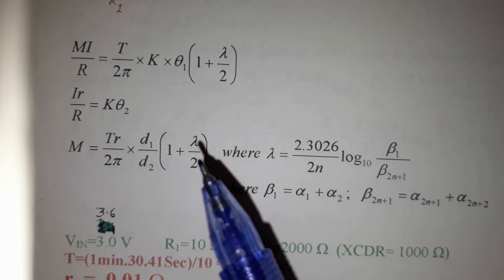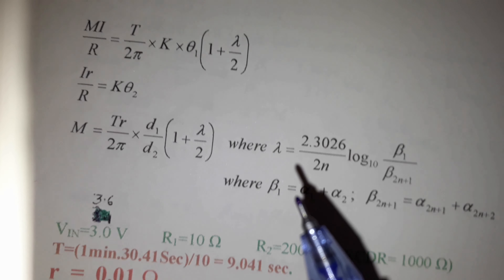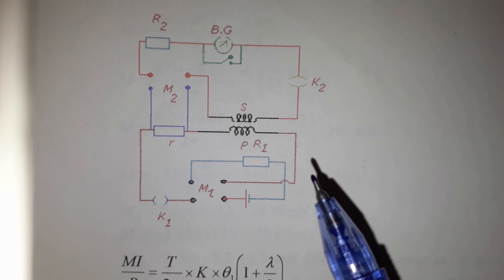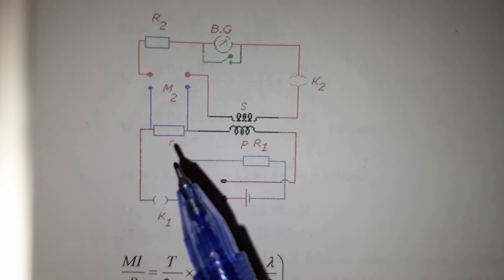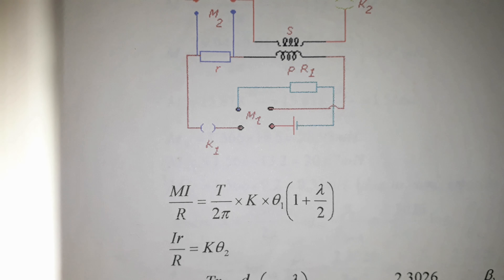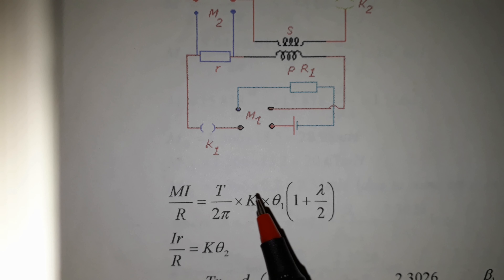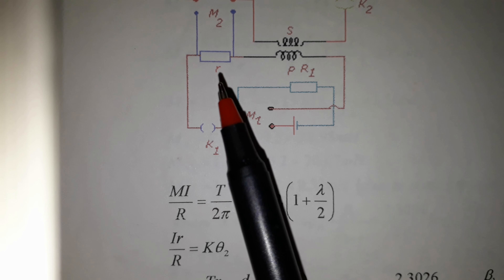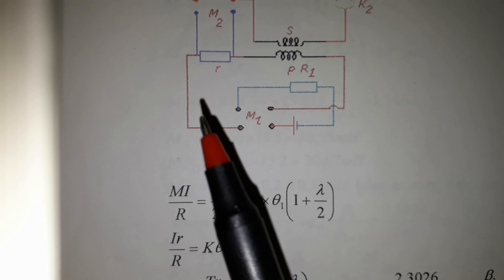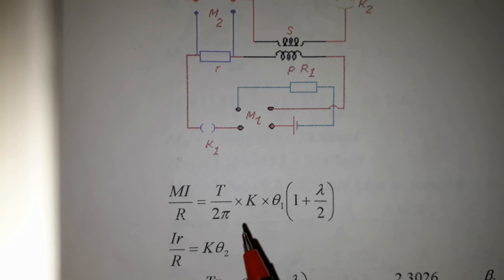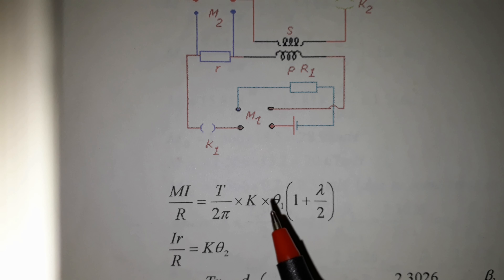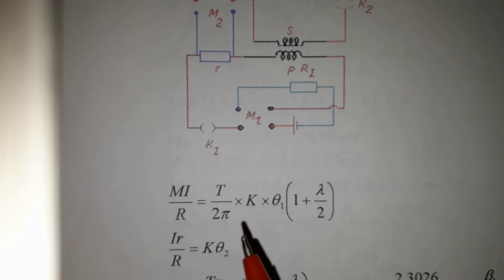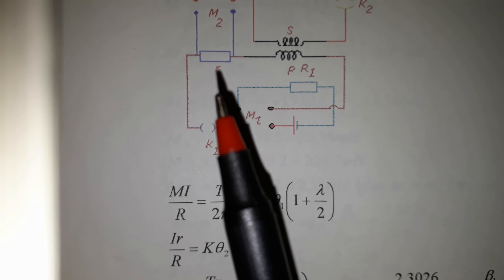The details of the log decrement are discussed in a separate video. Now, what is the necessity of the small resistance r? Since I and R are the same in both cases — in the ballistic throw as well as in the steady throw — we can eliminate I and R. But why do we use a small value of resistance r?